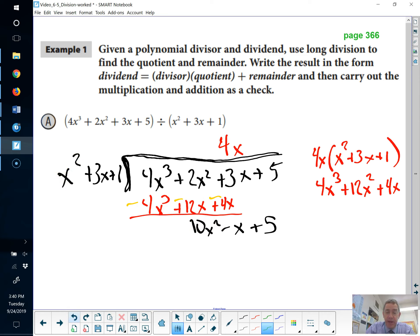Minus 10 times x squared plus 3x plus 1 is minus 10x squared minus 30x minus 10. So, that's what we've got here. Minus 10x squared minus 30x minus 10. And now, we're going to subtract.